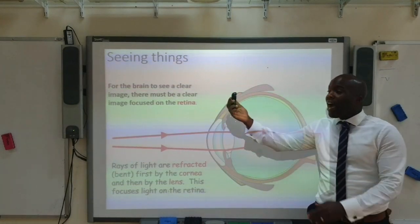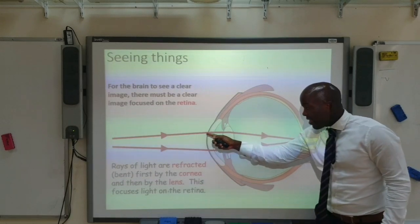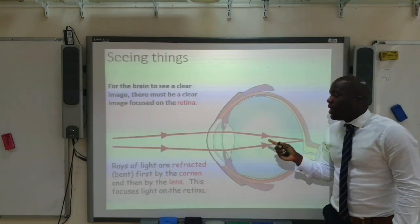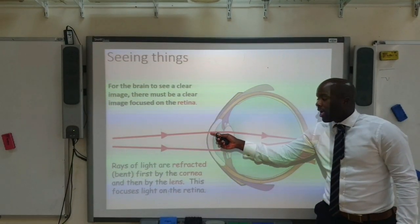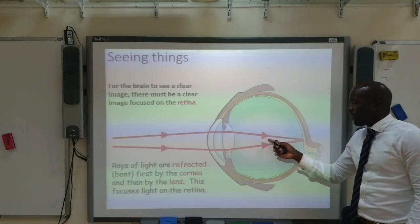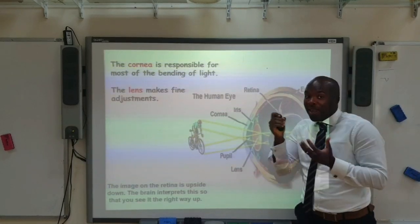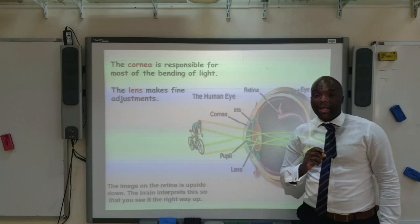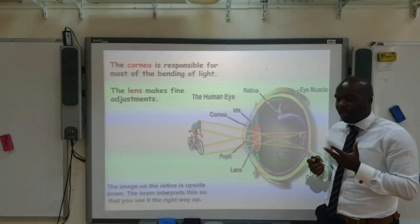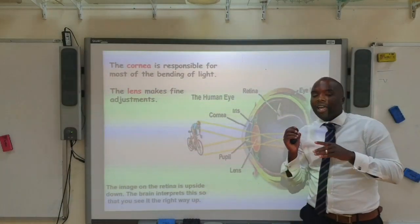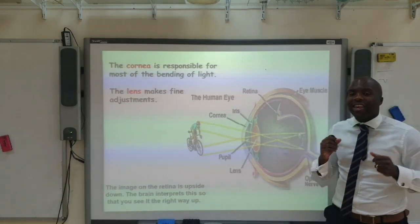In order for this to happen, the light rays coming from the object must be refracted — bent onto the retina. The light is refracted first by the cornea and then by the lens in order to focus the light clearly onto the retina. The cornea is responsible for bending the majority of light, and the lens handles the fine adjustments. The image that appears on the retina is actually upside down; however, the brain interprets this so that you see it the right way up.